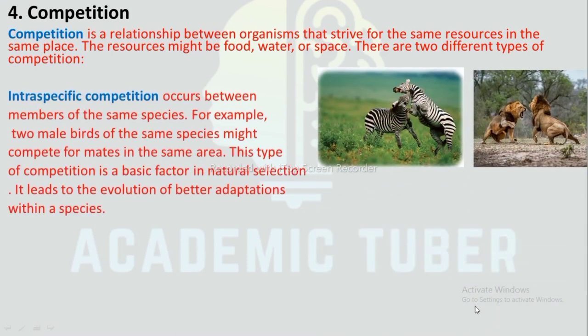Intraspecific competition: Intraspecific competition occurs between members of the same species. For example, two male birds of the same species might compete for mates in the same area. This type of competition is a basic factor in natural selection; it leads to the evolution of better adaptations within a species. For example, two zebras fighting for the same grass, or two lions fighting for a territory.